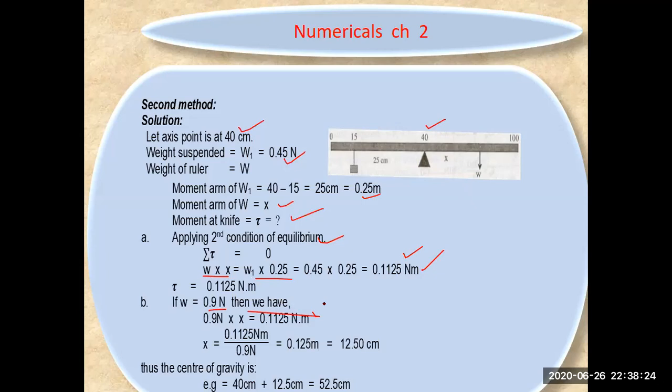Then you have calculated the distance, and after calculating you are finding the CG. It will be 40 plus 12.5 centimeters - at this point it will be balanced. This is another alternate method to solve this type of problem for calculating center of gravity.